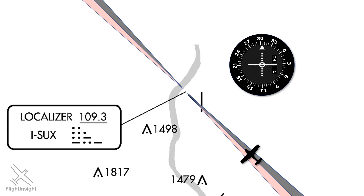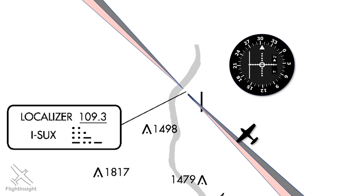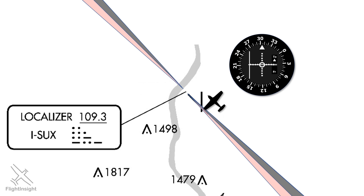Now, let's say we get a bit off course to the right side — it happens to the best of us — and we get the indication of the needle swinging to the left. As we continue inbound, we're not stabilized for landing and we'll need to do a missed approach. As we maintain this course past the runway, the needle stays to the left. Notice the 'to' flag remains on even as we pass the approach end of the runway. This is because the localizer antenna is located at the far end, the departure end of this runway.